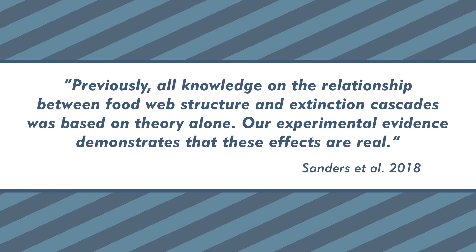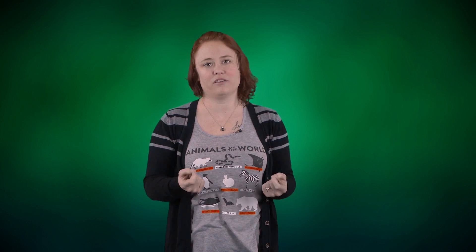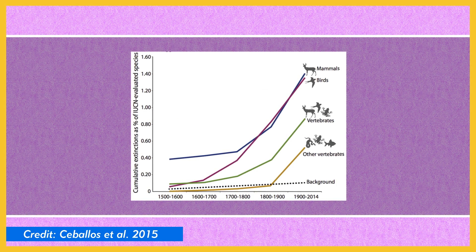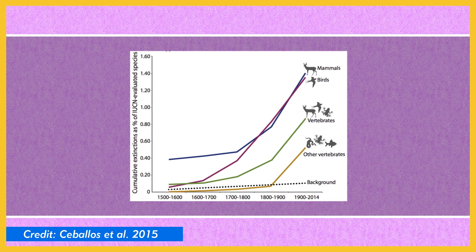So why did this particular article make it into this prestigious journal? Journals love to publish studies that are novel — the editors like being able to say there's an awesome study and it's never been done before. Ecologists have long considered the effects of having more species on reducing the risk of extinctions, but the authors state that previously, all knowledge on the relationship between food web structure and extinction cascades was based on theory alone. Their experimental evidence demonstrates that these effects are real — that's a big deal. Not only did the team move a concept from theory into real evidence, but they were the first to do it. This paper also addresses something very relevant: extinction rates are the highest they've been in recent history, and understanding the domino effect of extinctions is absolutely critical moving forward.